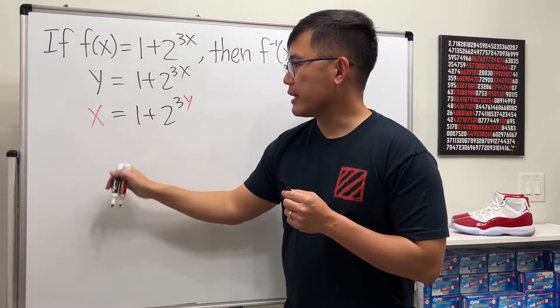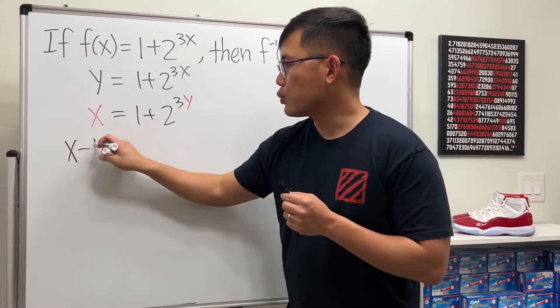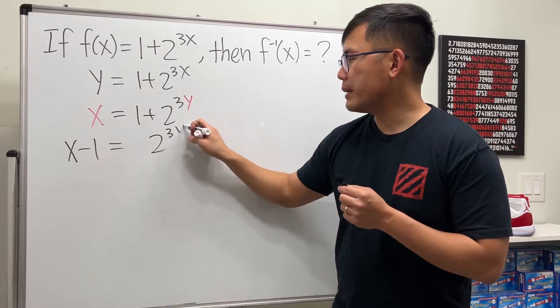Okay, let's put the 1 to the other side, so we get x minus 1 equals 2 to the 3y power.